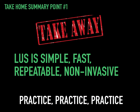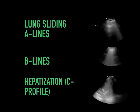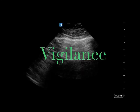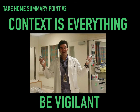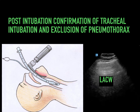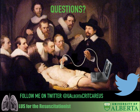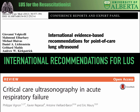Some take-home points: lung ultrasound is simple, fast, repeatable, and non-invasive. Practice is critical and you need a certain number of scans to become well-acquainted with normal lung findings. We talked about a variety of findings from sliding to A lines to B lines and hepatization. Context is everything — lung findings cannot be used in isolation. We can use lung sliding post-intubation to confirm tracheal intubation and to exclude pneumothorax. You can follow me on Twitter at UAlberta CritCare Ultrasound, and refer to the International Recommendations for Lung Ultrasound by Volpicelli et al. 2012, and the excellent review by Philippe Vignon on critical care ultrasonography in acute respiratory failure.